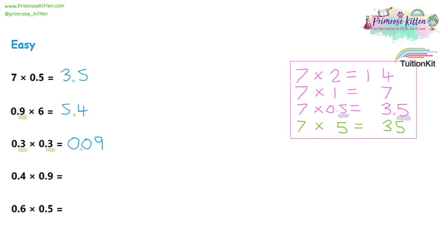You can think of it as: for every decimal in the question, we move the decimal point to the left the same number of spaces. Next question: 0.4 times 0.9. First, four times nine gives us 36. There are two decimals in the question — the point four and the point nine — so we move the decimal place two places to the left, giving us 0.36. Then 0.6 times 0.5: five times six gives us 30. Again two decimals, so moving two places left gives us 0.3.